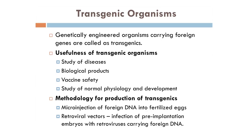Transgenic organisms are also used to produce biological products. For example, Rosie cow was the first transgenic animal which was prepared, and this cow produced protein-enriched milk rich in alpha-lactobumin. Then we can use transgenic organisms to test vaccine safety — transgenic mice have been prepared to test vaccine safety, and the polio vaccine is being tested on these mice. Transgenic organisms can also be used to study normal physiology and development — we can prepare transgenic animals to study how normal functioning of the body takes place, how genes are being expressed and how various functions are affected.